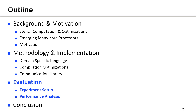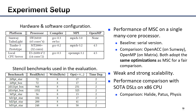Next, I will introduce the evaluation. We conduct experiments on three hardware platforms: Sunway, Tianhe-3 prototype, and our local CPU server. We select a set of stencil benchmarks with different shapes, input dimensions, and orders, representing a wide range of scientific applications. We first evaluate the performance of MSC on a single many-core processor, then evaluate scalability on multiple nodes, and compare MSC with state-of-the-art stencil DSLs on the CPU platform.